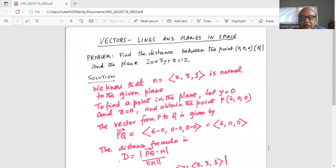How are you doing? Today we are going to talk about distance between a point and the plane. So let me share my screen with you. Find the distance between the point which is Q and the plane 2x plus 3y plus z equal to 12.